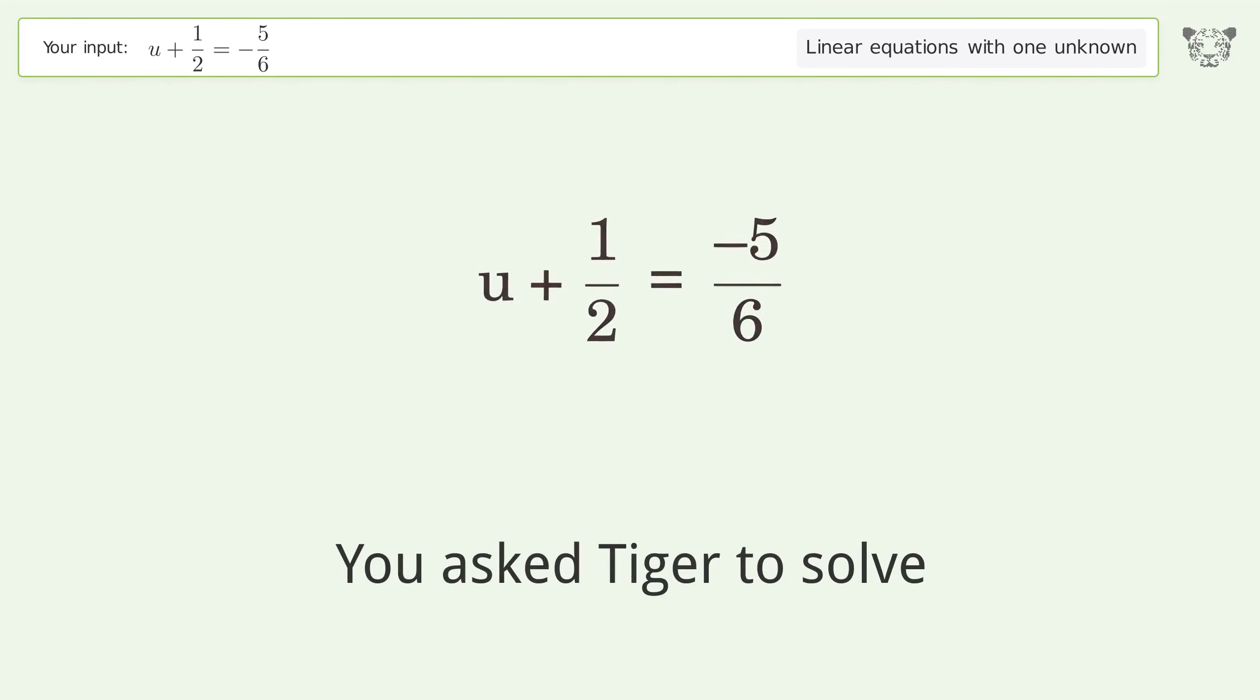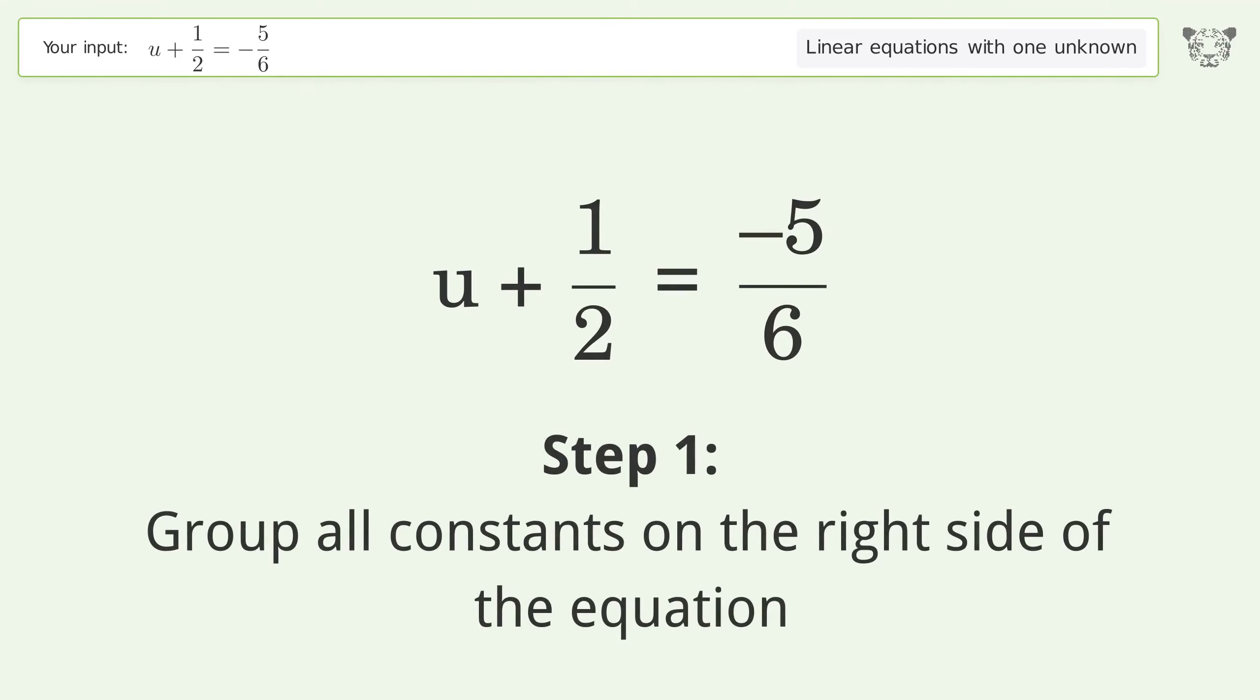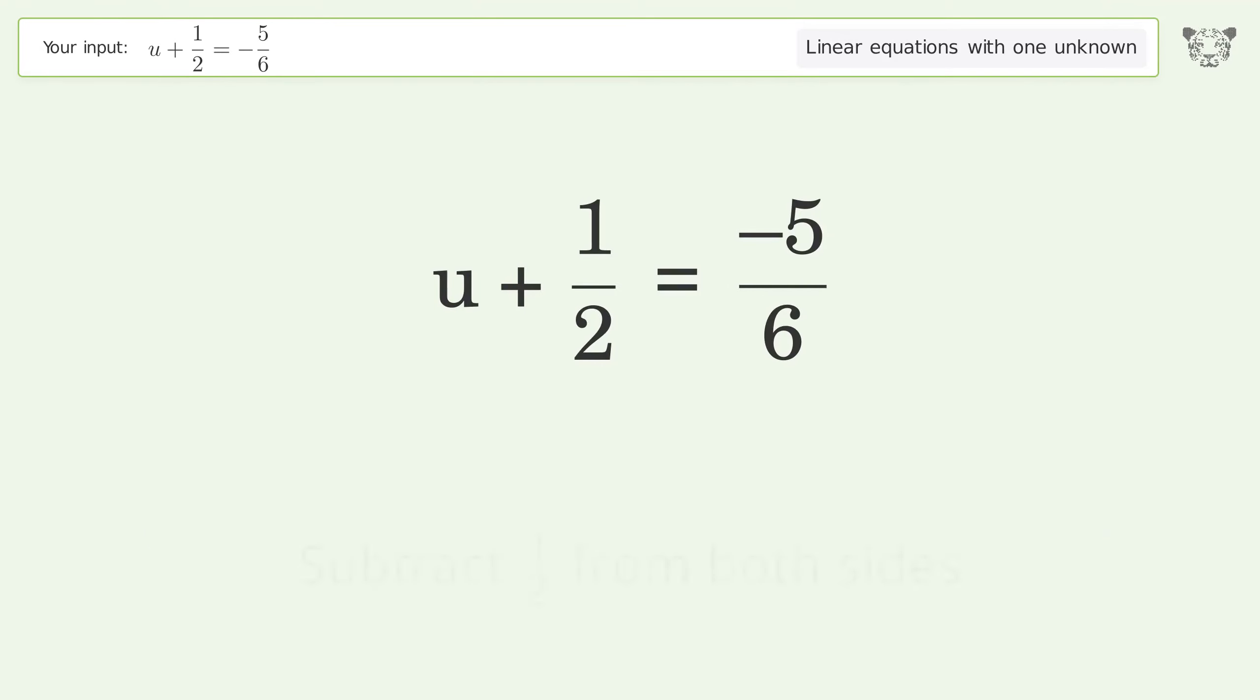This deals with linear equations with one unknown. The final result is u equals negative 4 over 3. Let's solve it step by step. Group all constants on the right side of the equation and subtract.